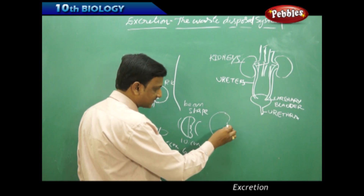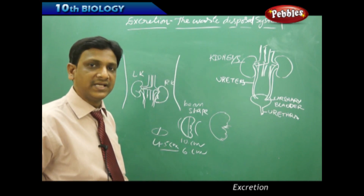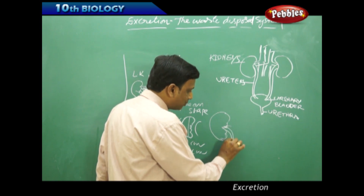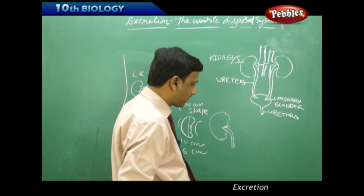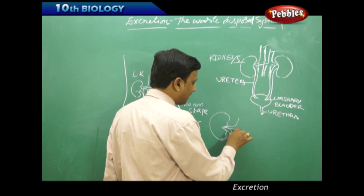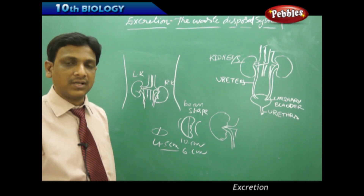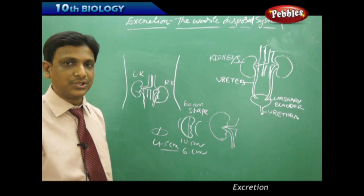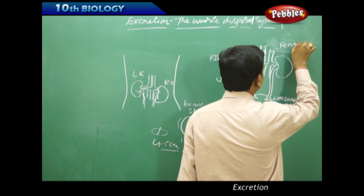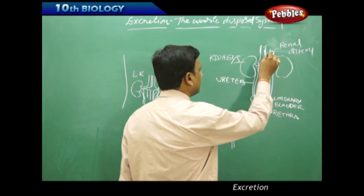Each kidney has a hilum or fissure on its inner concave side. Through this hilum, the renal arteries and renal veins are connected to the kidney, and the ureter — which carries urine to the urinary bladder — also originates from this region. Blood vessels are attached to the kidney at this fissure: the renal artery and the renal vein.